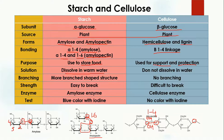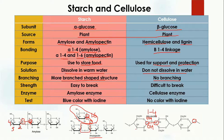Starch can be dissolved in warm water, while cellulose cannot be dissolved in water. Starch has a more branched structure because of the 1,6 bonding — this linkage creates more branches. In the case of cellulose, no branching is present, so cellulose is a straight structure.